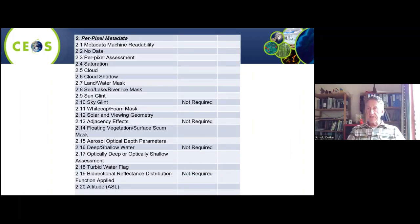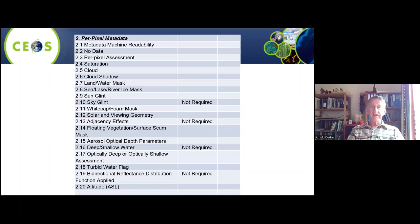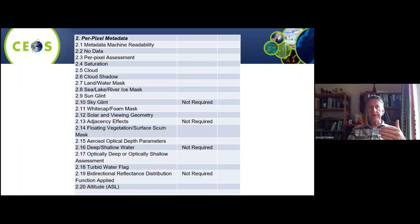Then we go to per-pixel metadata — so for each pixel. We have massive amounts of pixels, petabytes of pixels. For each pixel we do want this information: you have to look at clouds, of course, but also cloud shadows; you need a land-water mask, and especially in the northern hemisphere you need sea-ice and river-ice masks. You have to identify sun glint at the water surface, white caps from waves, floating vegetation on the surface — if you're looking for water quality, those algorithms can't deal with floating vegetation, so you need to flag it. There are many of these per-pixel metadata fields.